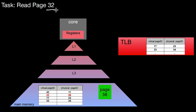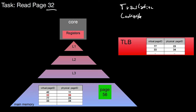We know our storage hierarchy by now. But what computer systems usually also have is a little extra cache — not contained in L1, L2, L3, or something like that. It's an extra little cache called the Translation Look-aside Buffer, or TLB. This keeps a subset of the mappings from virtual memory to physical memory.